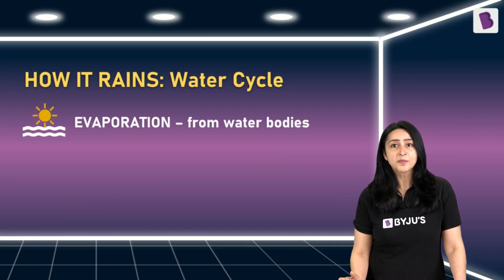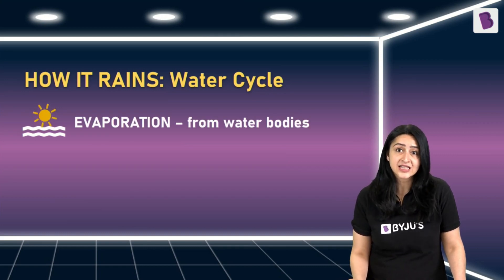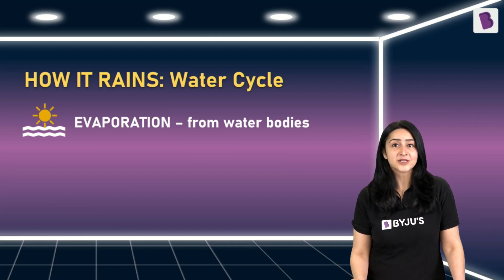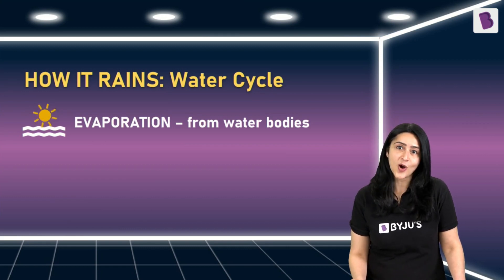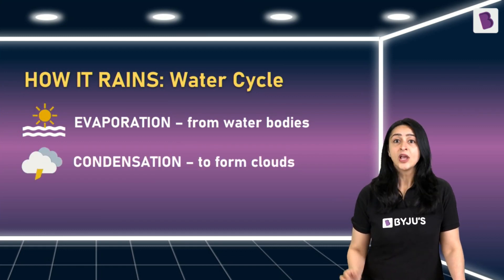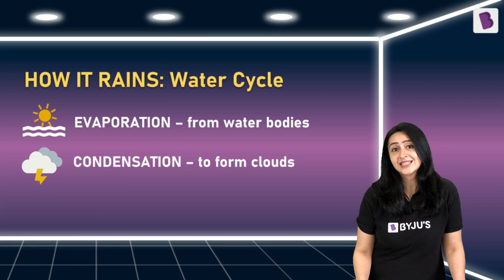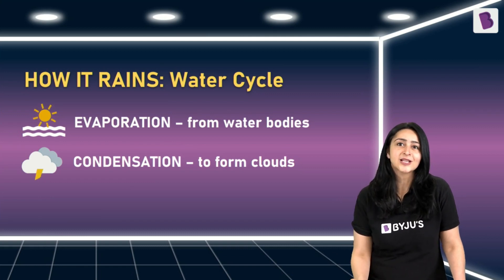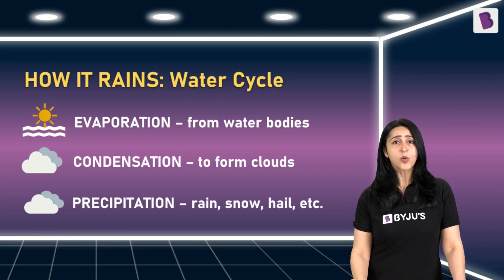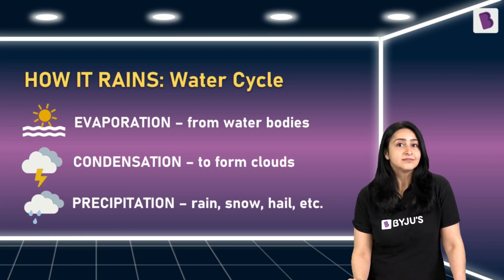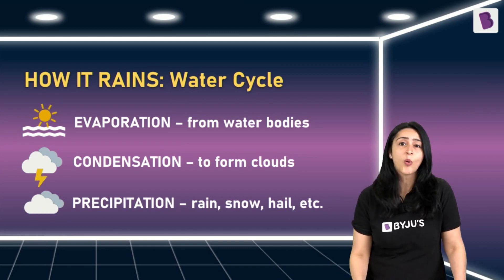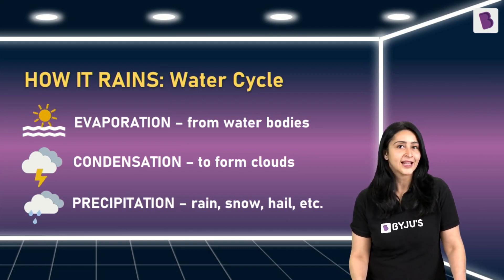You know the basics of the water cycle. Water from different water bodies evaporates and turns into water vapor. This water vapor enters the atmosphere and rises along with hot air. And eventually, as the air cools down, the water vapor condenses to small water droplets forming clouds. When these clouds are saturated and the water droplets become too heavy, they fall as rain or other forms of precipitation like snow, hail and so on.